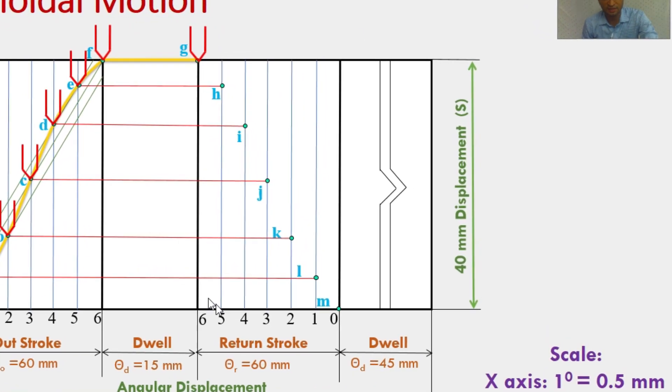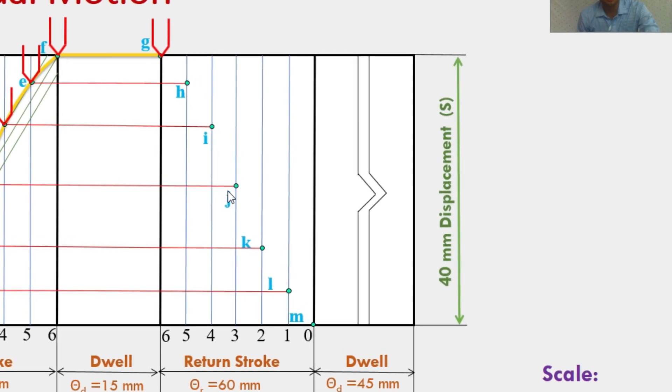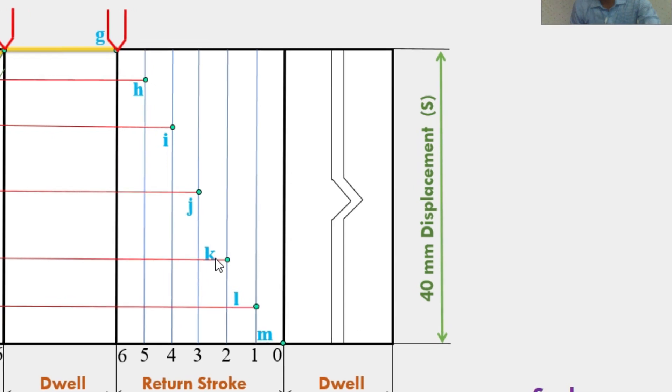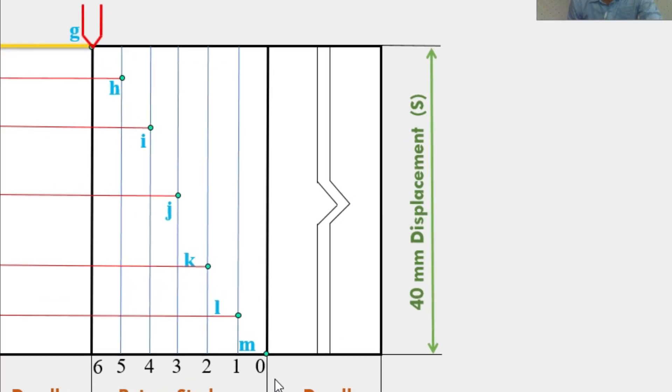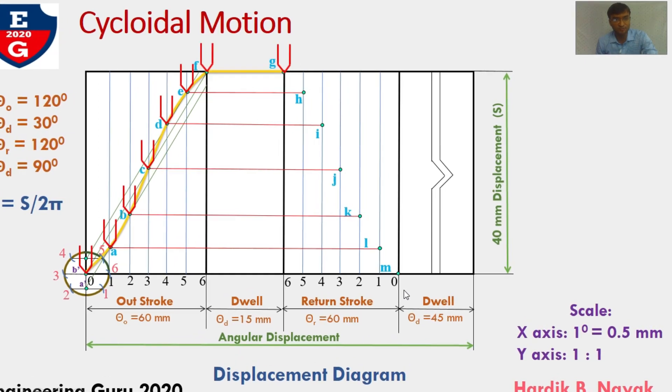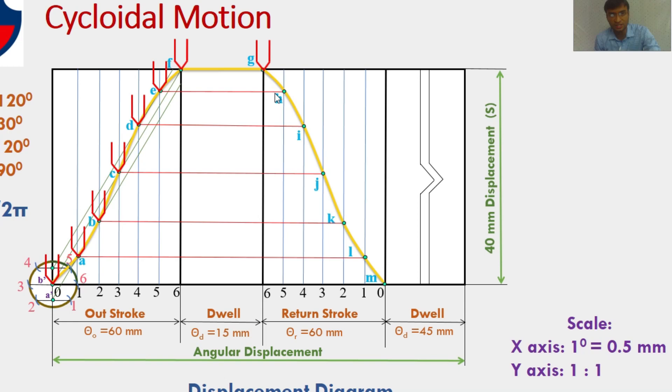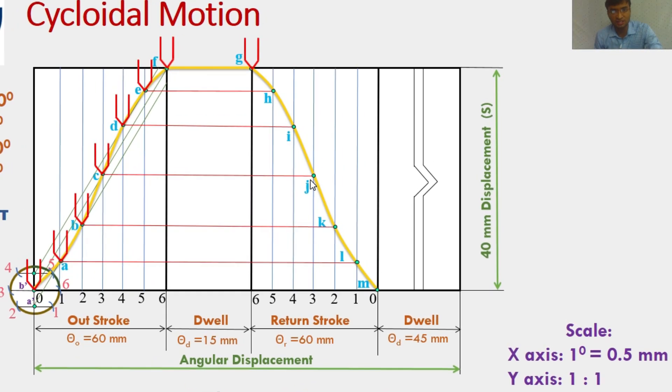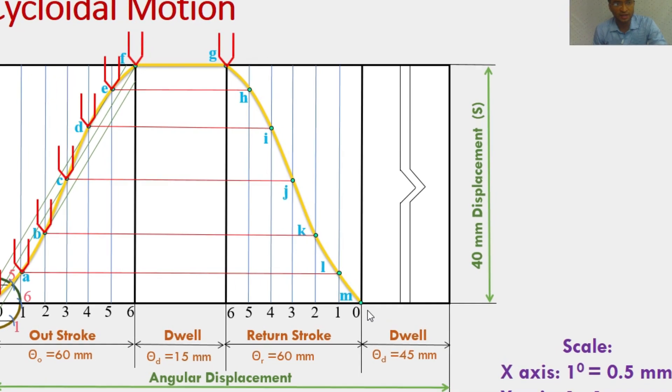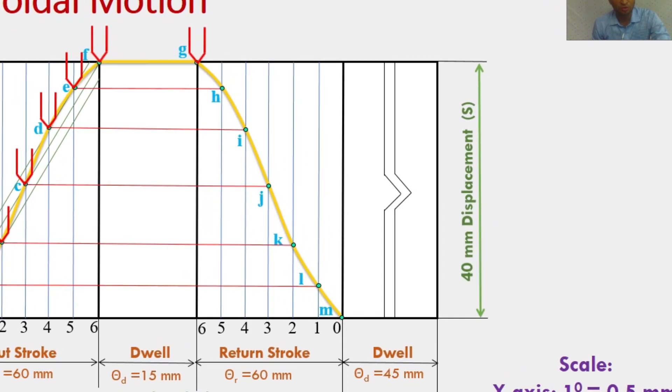This third division vertical line and this horizontal line intersect here. This is point J. Similar way find point K, L and M. These are the respective points. I would be connecting them with the help of smooth curve from this point G, H, I, J, K, L and M. This curve indicates Cycloidal motion with return stroke.